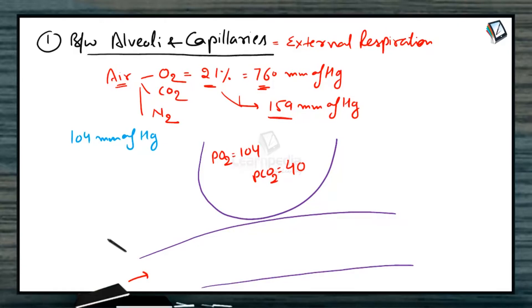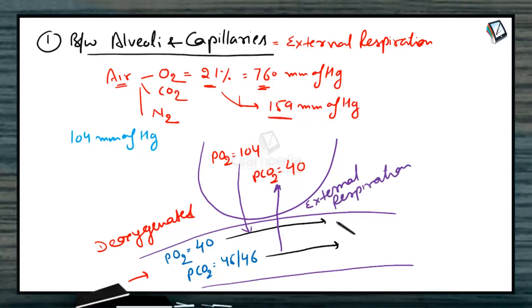Let us suppose this is alveoli and this is blood capillary. Pressure of oxygen in alveoli is around 104 and pressure of CO2 in alveoli is around 40. The blood which is moving towards alveoli is deoxygenated, so it must have less oxygen and more CO2. Level of oxygen in this blood is around 40 and level of CO2 is around 45 or 46. According to law of diffusion, gases will diffuse from their high pressure to low pressure. Oxygen will diffuse from alveoli to blood and CO2 gets diffused out from capillaries to alveoli.